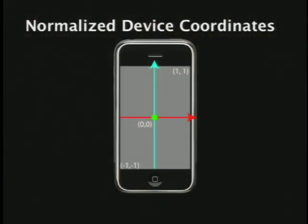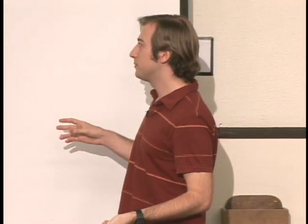A student asks: why is it a unit cube if the iPhone screen isn't square? You're right — there's an aspect ratio mismatch. If you draw something from -1,-1 to 1,1, it'll come out stretched because OpenGL doesn't care what pixel aspect ratio you're using. This is the very first thing that comes up in the demo.